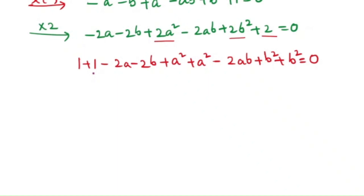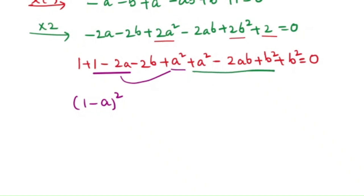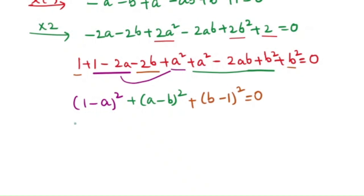We can write 1 - 2a + a² as (1 - a)², and a² - 2ab + b² as (a - b)², and 1 - 2b + b² as (b - 1)². So the equation becomes (1 - a)² + (a - b)² + (b - 1)² = 0.